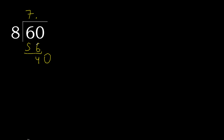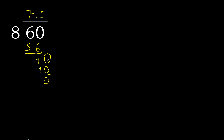Ok, 40. 8 multiplied by 5 is 40. Subtract: 0. Next — that is not a number, and here is 0, therefore finish it. 60 divided by 8 is here.